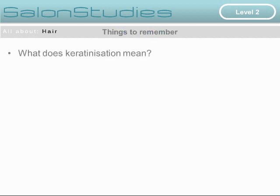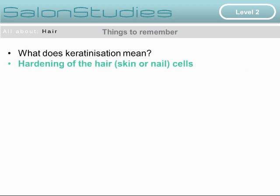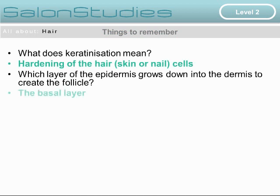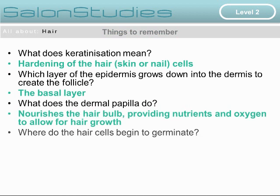Things to remember. What does keratinisation mean? It's the hardening of the hair, skin or nail cells. Which layer of the epidermis grows down to the dermis to create the hair follicle? That's the basal layer. What does the dermal papilla do? It nourishes the hair bulb, providing nutrients and oxygen to allow for hair growth. And where do the hair cells begin to germinate? They germinate in the matrix.